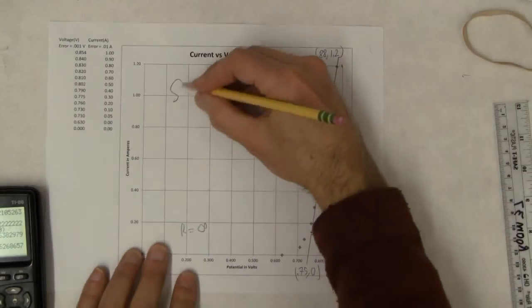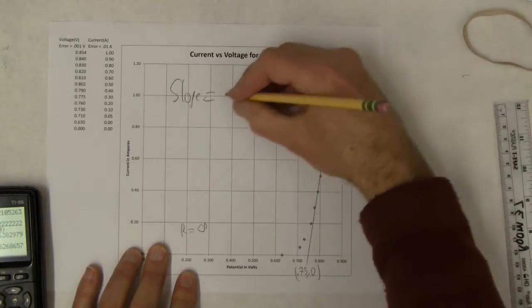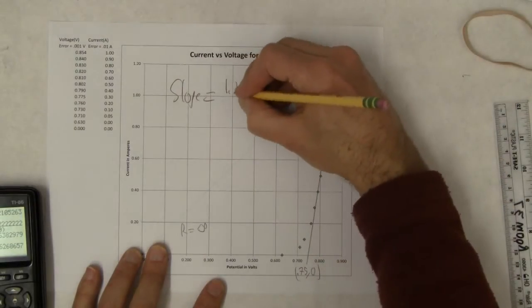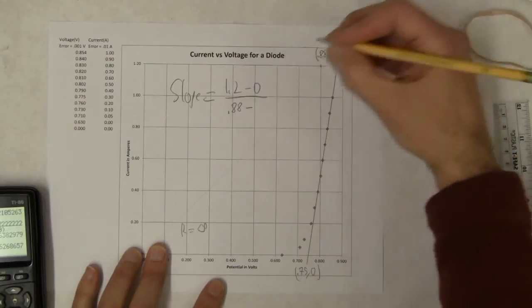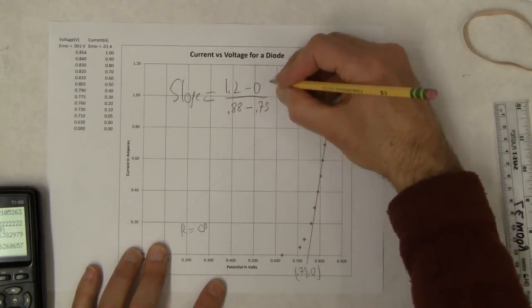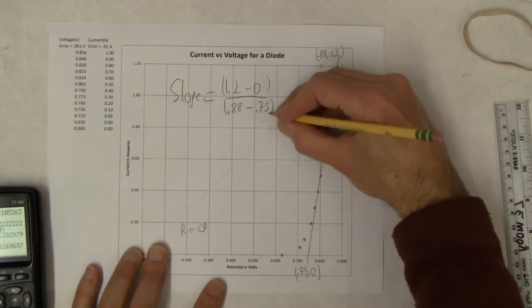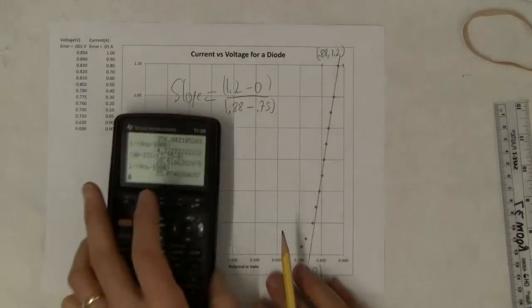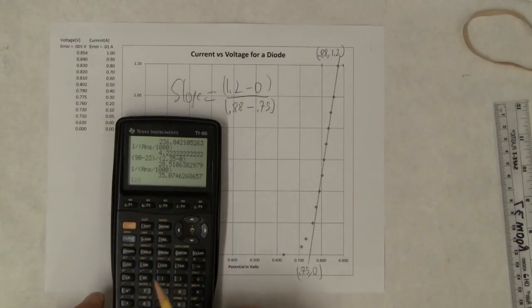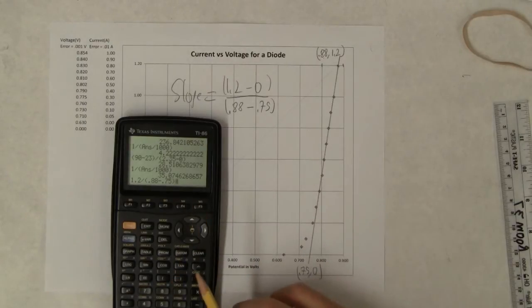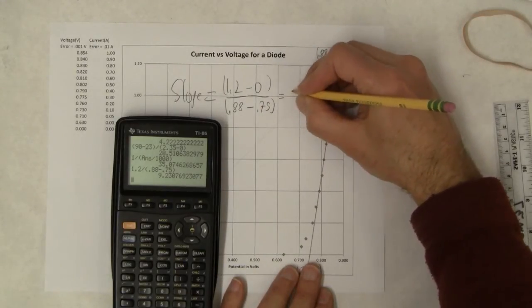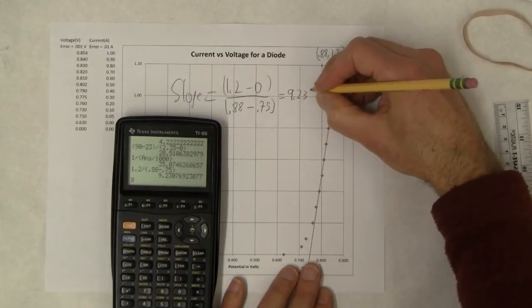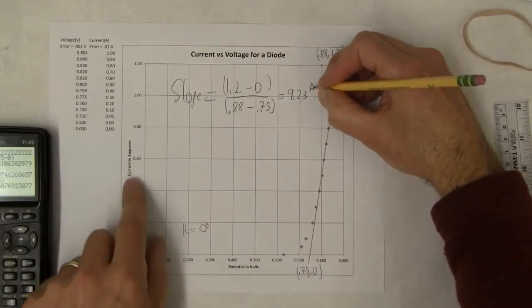Okay, so the slope is equal to this guy minus this guy. So 1.2 minus 0, divided by this guy minus this guy. So 0.88 minus 0.75. Now, these are amps, and these are volts, so I don't need to do anything with milliamps. So 1.2 divided by 0.88 minus 0.75. I get the slope is 9.2. And this is amps of rise per volt.